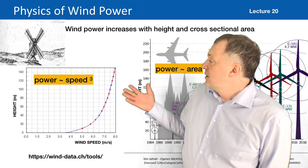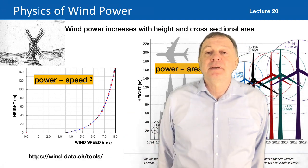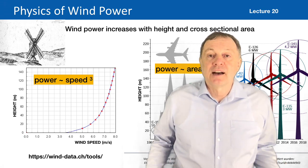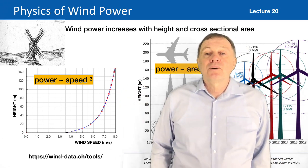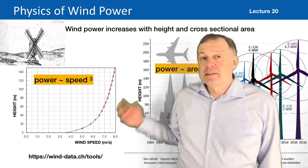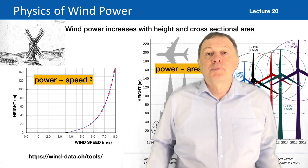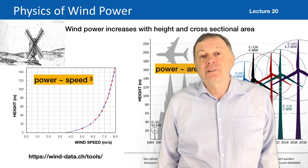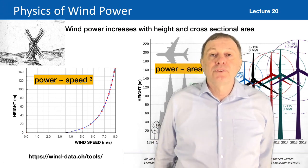Last lecture I showed you this diagram, which shows that with larger height the wind speed increases, and that modern wind power stations are quite high because there they can get more power. I showed you that wind power goes with the third power of speed, and I would like to explain today why this is the case.